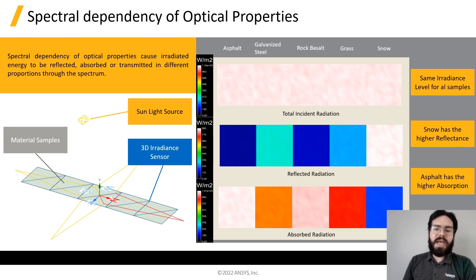On the first row, we can verify that all of them were exposed to the exact same amount of radiation. On the second and third row, we can see the reflected and absorbed energy, respectively. We can see that the behavior is quite different from material to material. That's why it's important to account for the dependencies when analyzing these kind of systems.